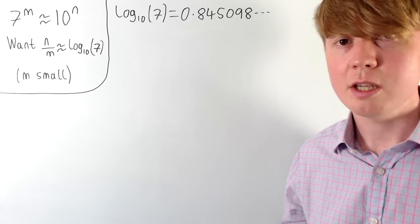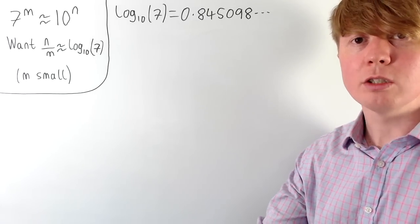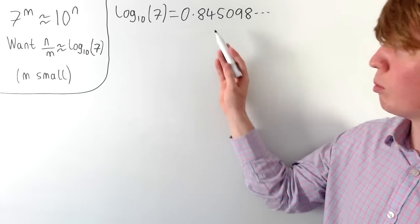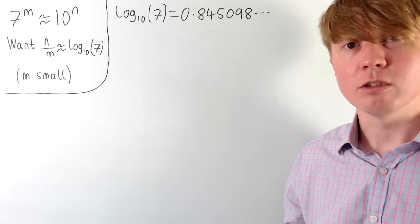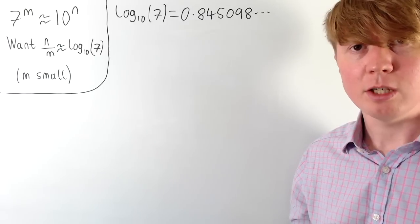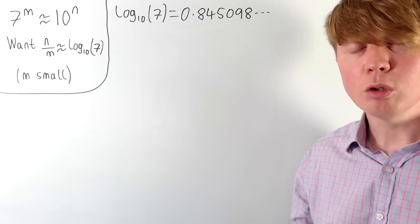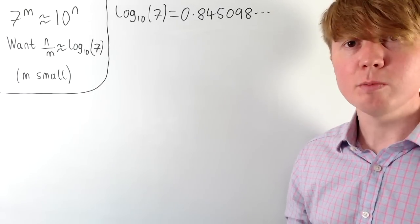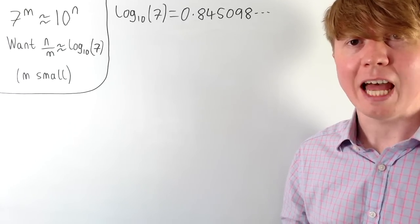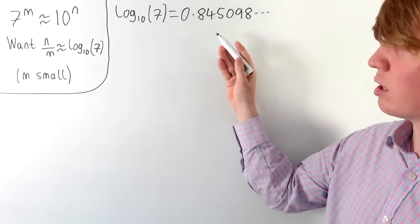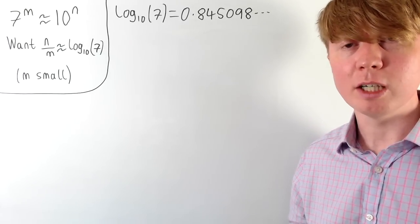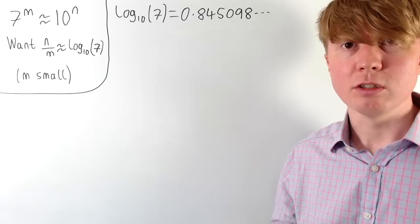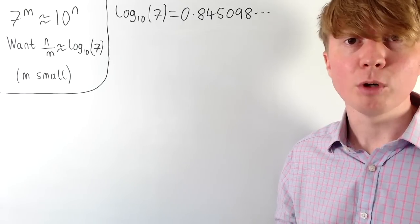Looking at the decimal expansion of log 7, one approach is to just round the decimal expansion to get a rational number. For example, taking the first three decimal places — 0.845 — we can turn this into the fraction 845 over 1000, which we use as our approximation for log 7. But the issue with this approach is our denominator m is always going to be a power of 10, or a factor of a power of 10, so we're missing out on many potential denominators that could give a better approximation for log 7.